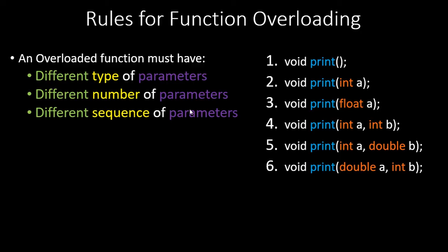You can see six different examples here: a basic function with no arguments, then one argument, then a different argument type, then two arguments, then two arguments with different parameter types, and then different sequence. All of these have the same name 'print' and can exist simultaneously in one C++ program. In function overloading there are no object-oriented concepts involved.